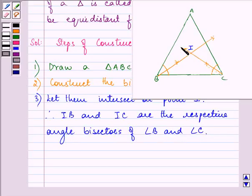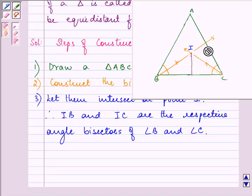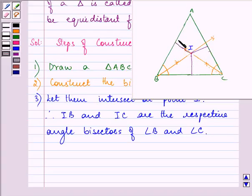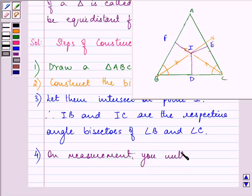Now, this point I is equidistant from all sides. If you measure it, it will be equal from all points. It is the perpendicular distance that you will be measuring. On measurement, you will find that ID equals IE equals IF.